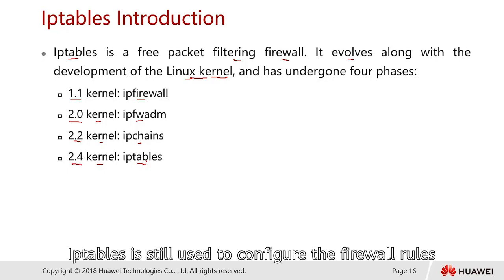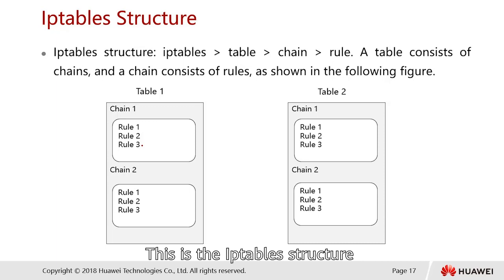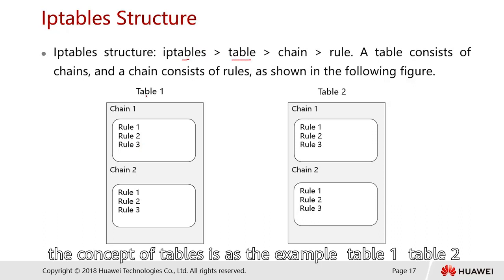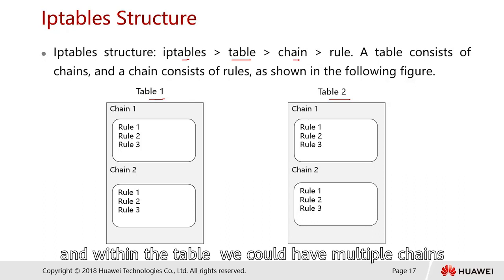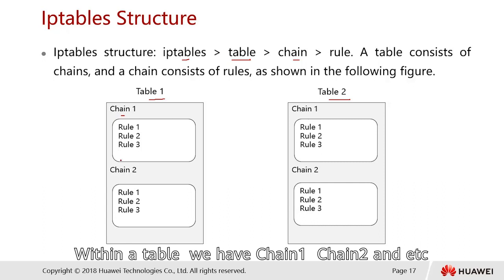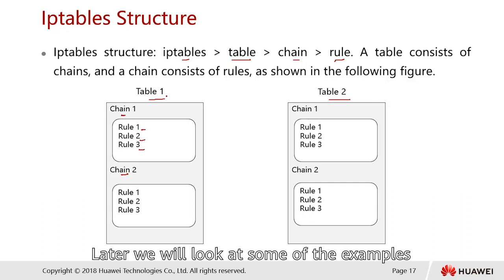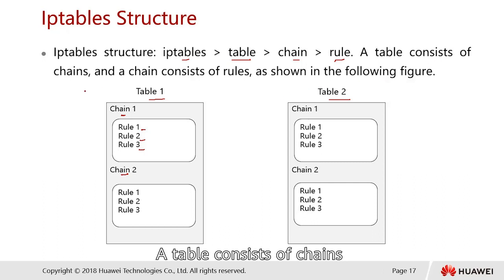The IP tables structure consists of tables, and within each table there can be multiple chains. Within each chain there are multiple rules. So the hierarchy is: IP tables → tables → chains → rules, as shown in the figure.